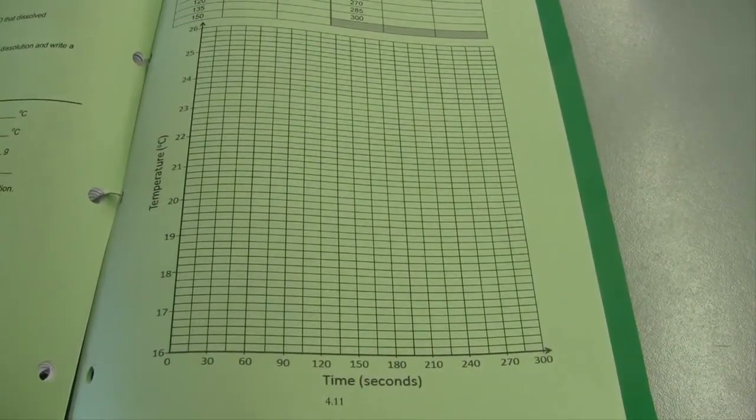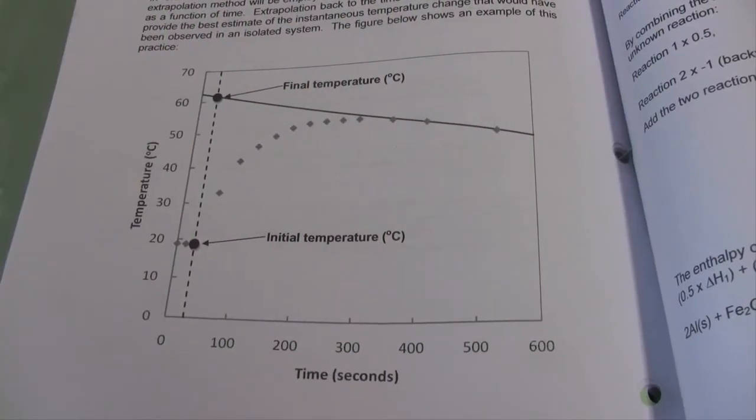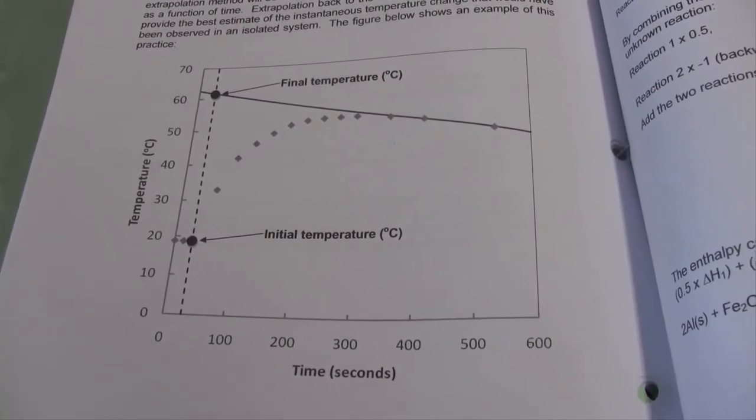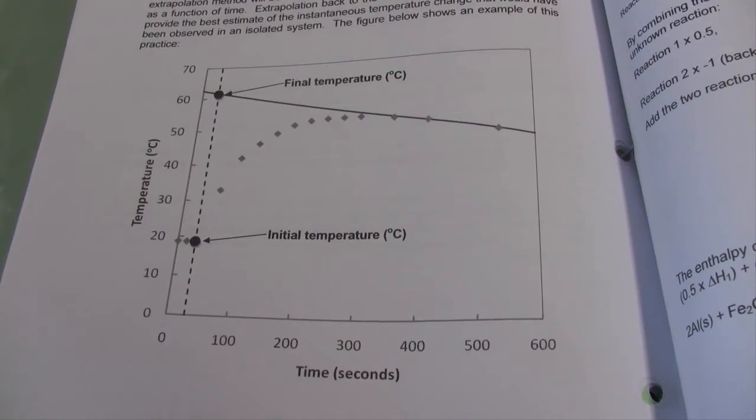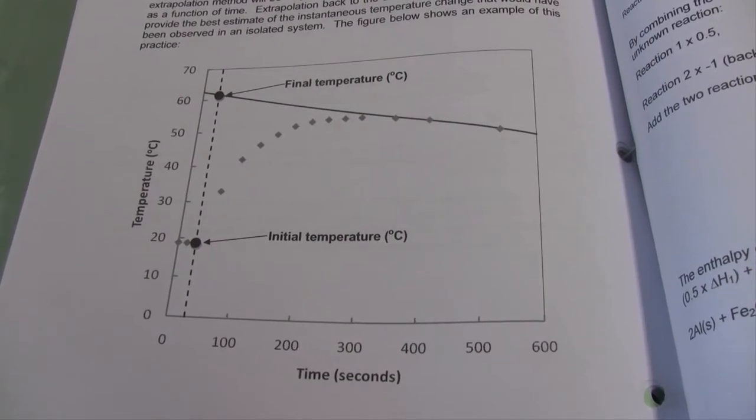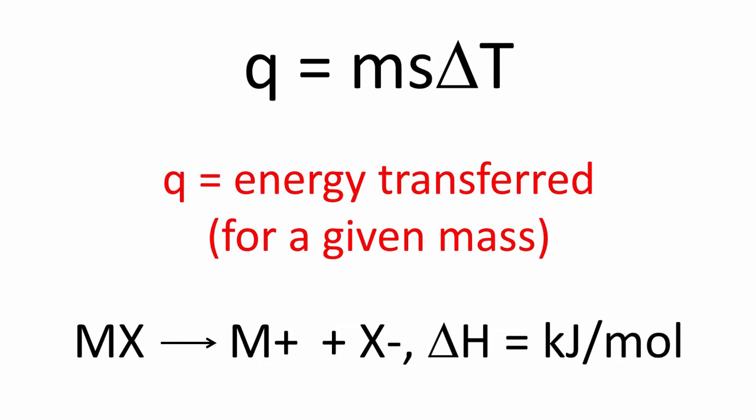We can then use the same extrapolation technique as before to determine the energy released by this chemical reaction. With a few simple calculations, we can determine the concentration of acetic acid in our vinegar. Quickly discussing a strategy, once again we can calculate the amount of energy transferred during the chemical reactions. This time we'll be using our thermochemical equation backwards. We already know the enthalpy of the reaction. We know how much heat energy is released per mole of reactant. Knowing that, and the amount of energy released by our reaction, we can calculate how many moles of our acetic acid were present in the 25 ml aliquot of vinegar.